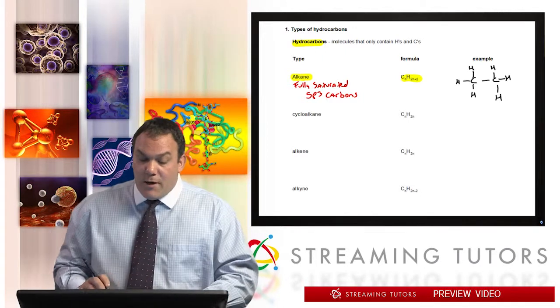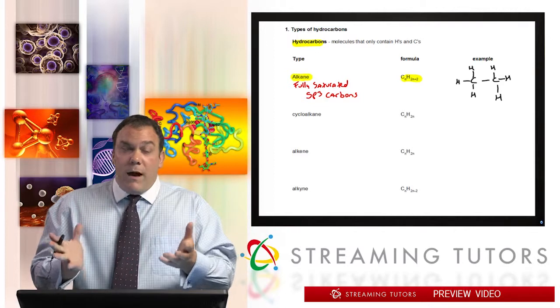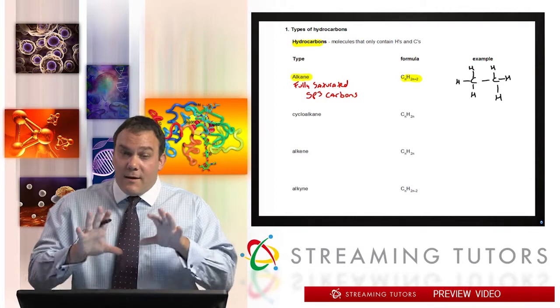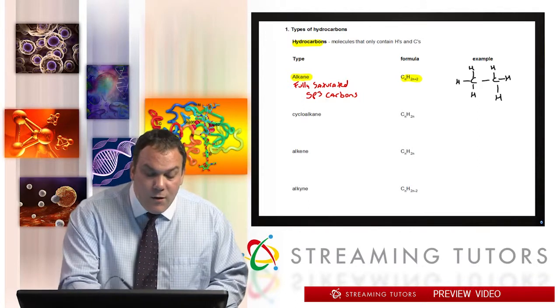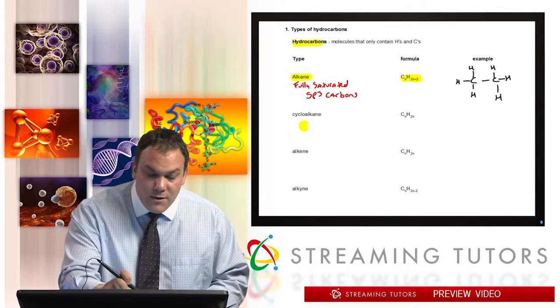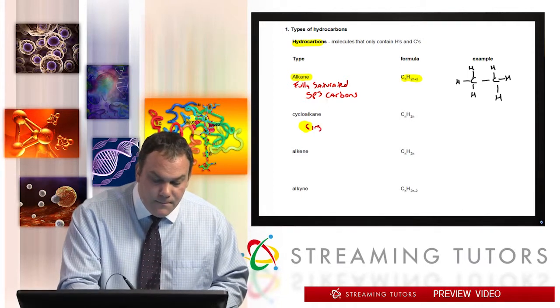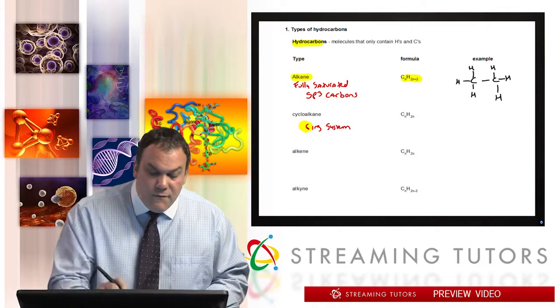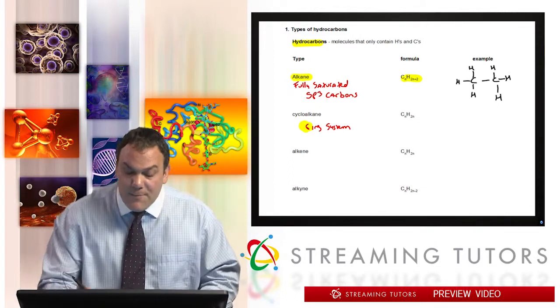So that's it, that's how we work that formula. It's the number of carbons and that's how you plug it in. Now another type of hydrocarbon, but one that's going to have less than the maximum number of H's, is a ring system. Cycloalkanes are rings, so these are where we have a ring, some sort of ring system, and the formula is actually CₙH₂ₙ.